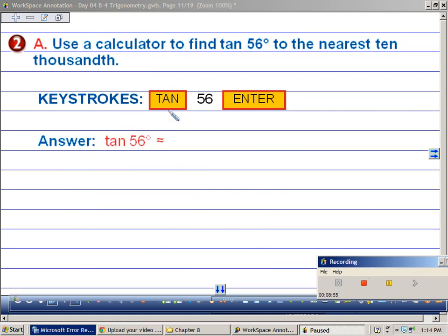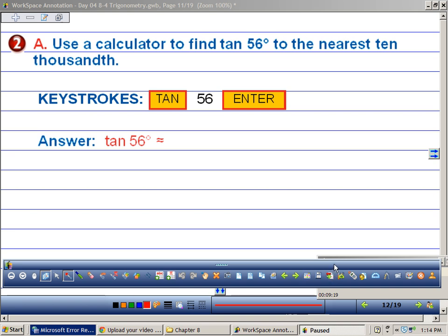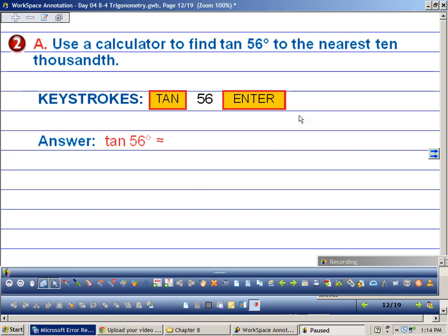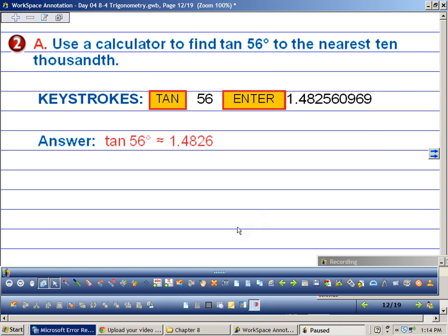Alright, so if you've got them, use them. Use a calculator to find the tangent of 56. I'm going to show you how to do this. Some calculators, the keystrokes are you hit tangent, you put in 56, you hit enter. Or you put in 56, and you hit tangent, and you hit enter. If you don't know how to use your calculator, come by after school and I will help you. Your answer should be 1.48.